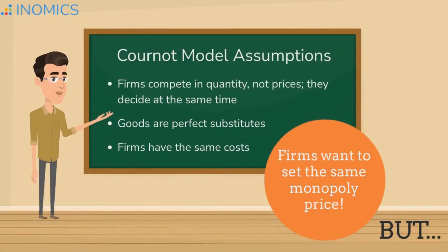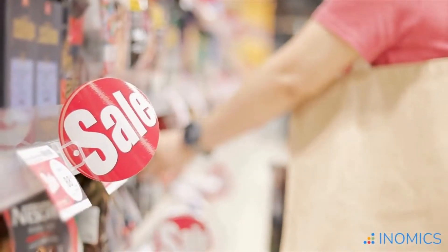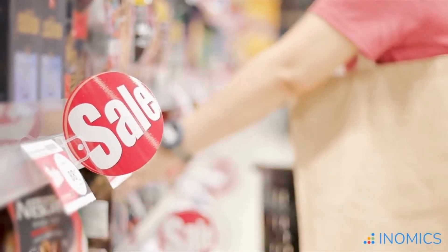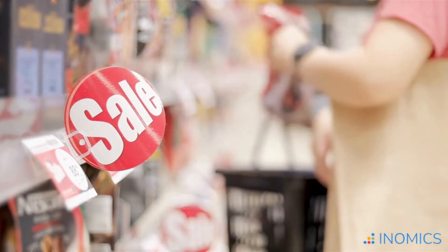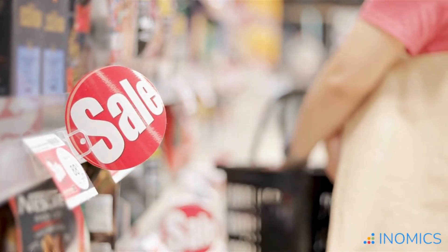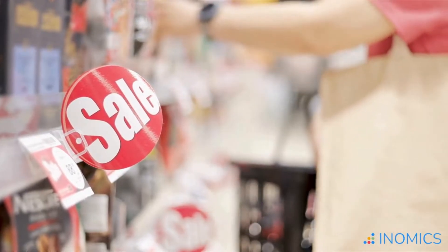Each firm again would like to produce the monopoly quantity and receive the monopoly price. But if every firm produces the monopoly quantity, the price will end up being very low since the quantity supplied is quite high in this case. Demand would then be split between all of the firms since they have the same quantity, price, and identical products. And so in this case, all the firms would be left with excess inventory and probably some losses.